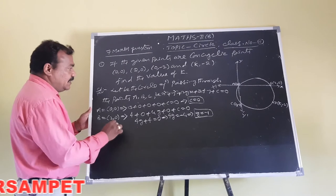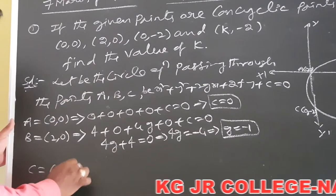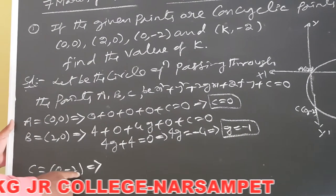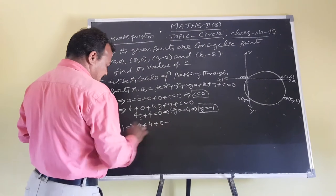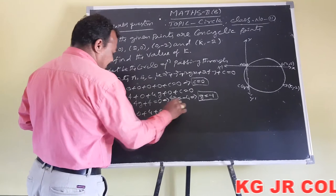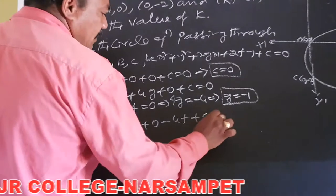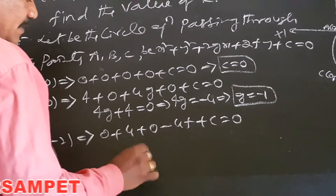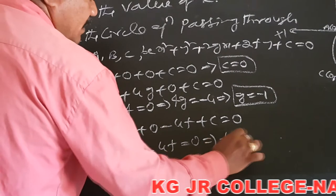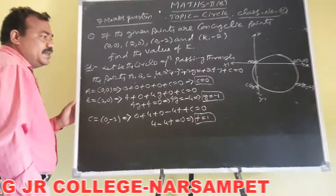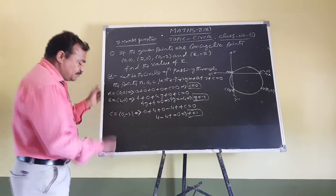Next, substituting point C=(0,-2): x=0, y=-2. We get 0 + 4 + 0 + (-4f) + c = 0. Since c=0, this becomes 4 - 4f = 0, so f = 1. We now have all values: g=-1, f=1, c=0.